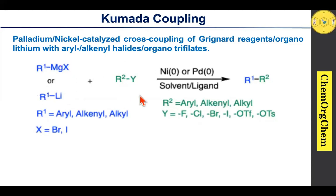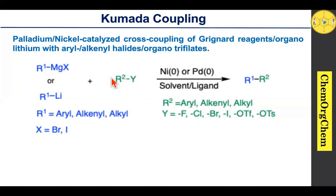Consider this reaction: when you take the Grignard reagent or organolithium, which reacts with organohalide or organotriflate or organotosylate in the presence of nickel(0) or palladium(0) catalysis, it readily produces the corresponding carbon-carbon coupling product. Notably, nickel(0) catalysis is only useful for coupling between Grignard reagent and organotriflate, organotosylate, or organohalide.